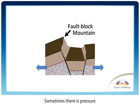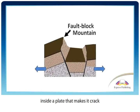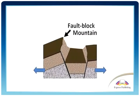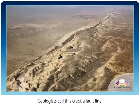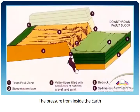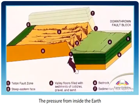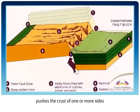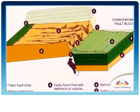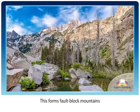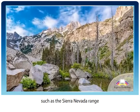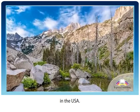Sometimes there is pressure inside a plate that makes it crack instead of folding. Geologists call this crack a fault line. The pressure from inside the Earth pushes the crust of one or more sides of the fault line up. This forms fault block mountains, such as the Sierra Nevada range in the USA.